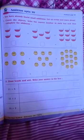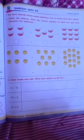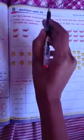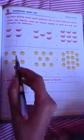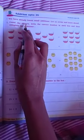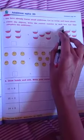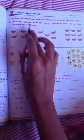Hello students, today I am teaching first-grade student addition up to 20. In this chapter, we are learning about addition up to 20 numbers. So, let's get started. Count the objects, write the correct number in each box and complete the addition.